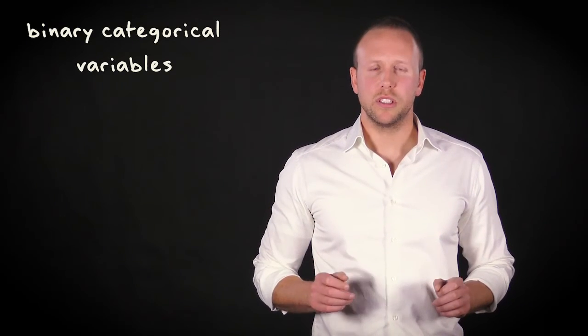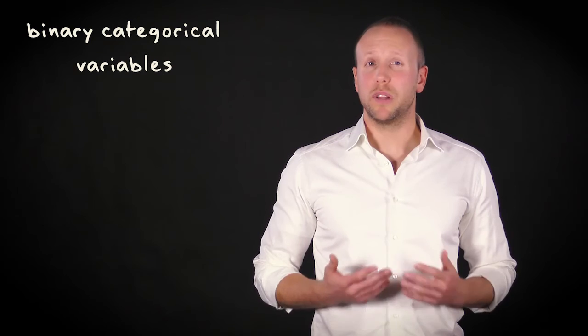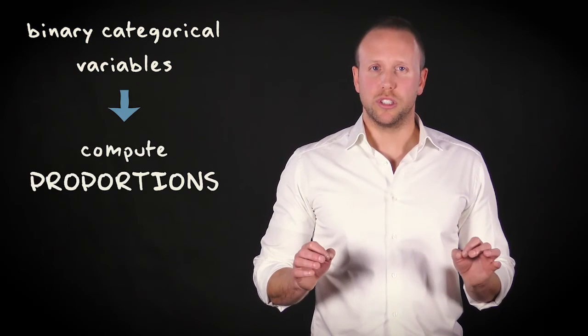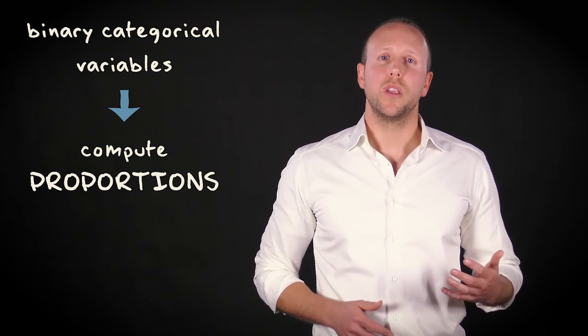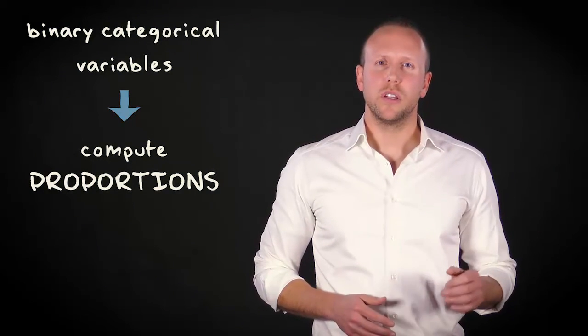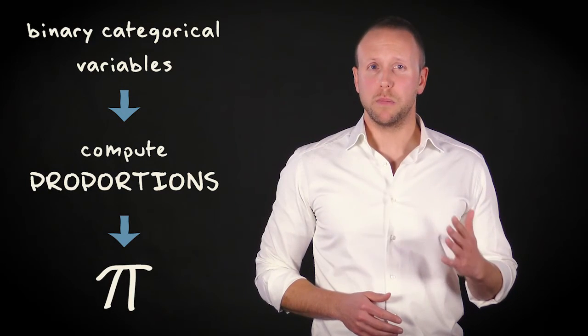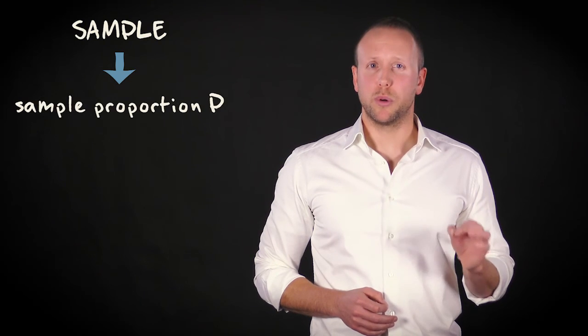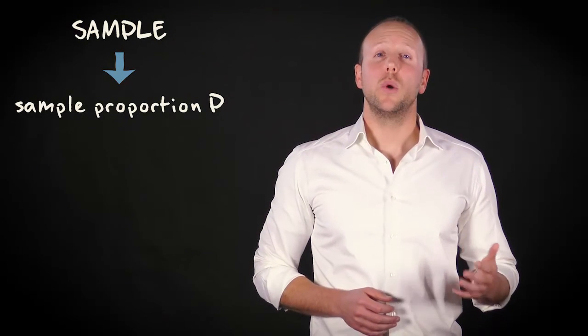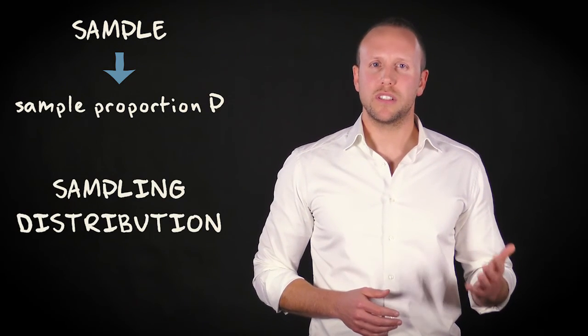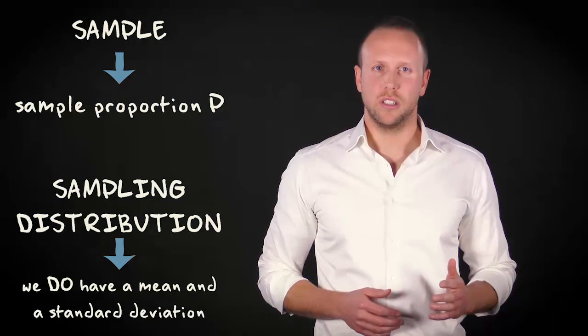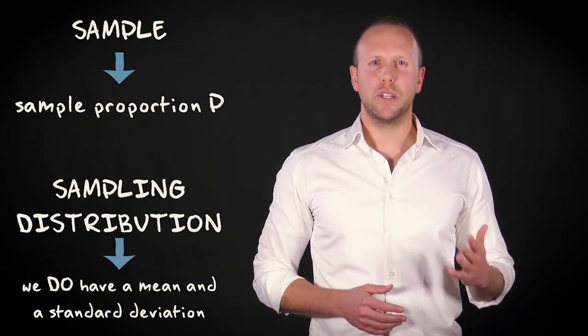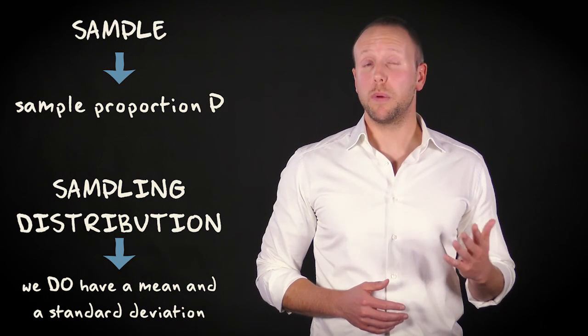To conclude: when it comes to binary categorical variables, it doesn't make sense to compute the population mean or standard deviation. Instead, we compute proportions — we only have the population proportion pi and the sample proportion p. Yet, when it comes to the sampling distribution of the sample proportion, we do have a mean and a standard deviation. These values can easily be computed as long as we know the value of the population proportion.